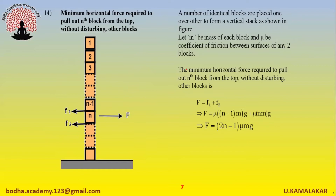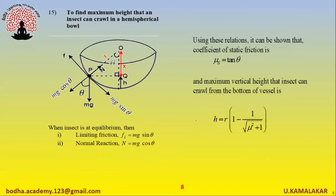A number of identical blocks are placed one over the other to form a vertical stack. Let m be the mass of each block and mu be the coefficient of friction between surfaces of any two blocks. The minimum horizontal force required to pull out the nth block from the top without disturbing the other blocks is given as: F equals (2n minus 1) times mu times mg.